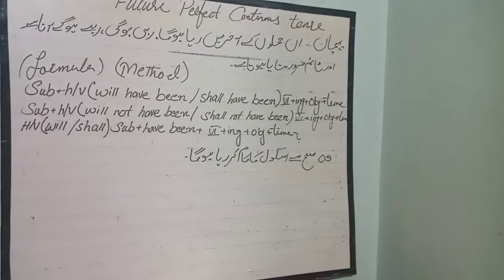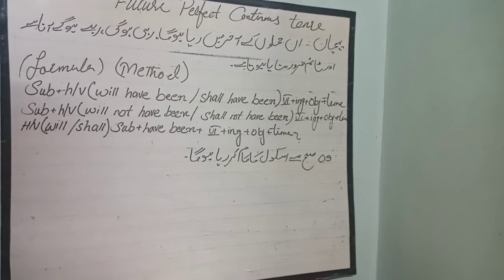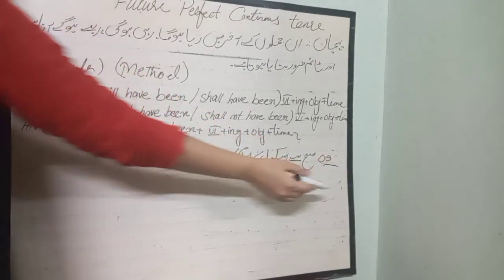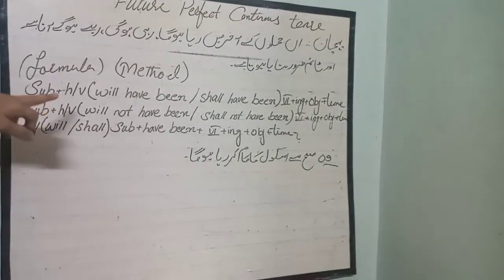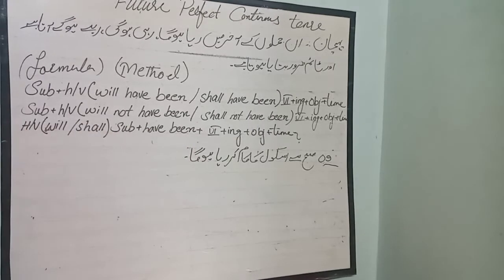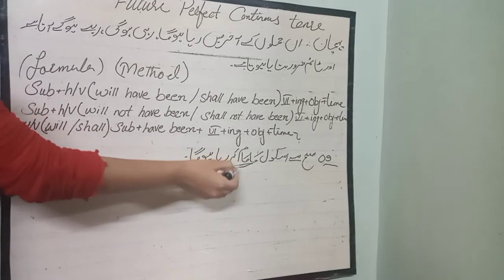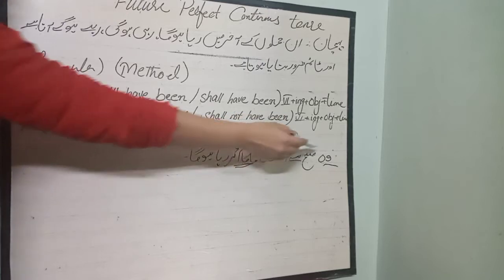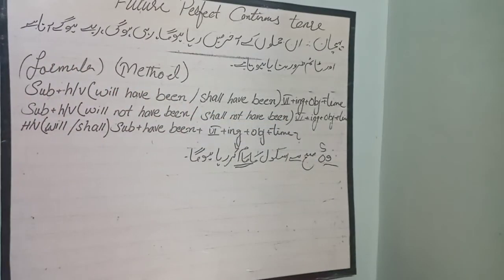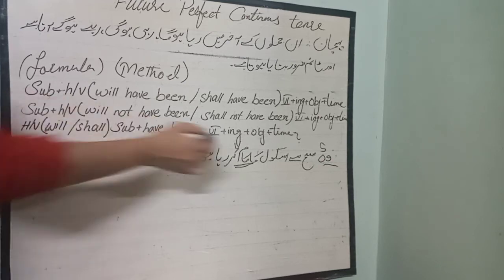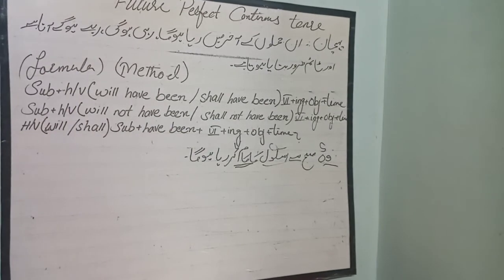Now we are looking at the sentence. The first step is to understand our subject. What is our subject? He. Then, what is our work? Work. What is our object? School. Subject, work, and object — we have learnt these three.